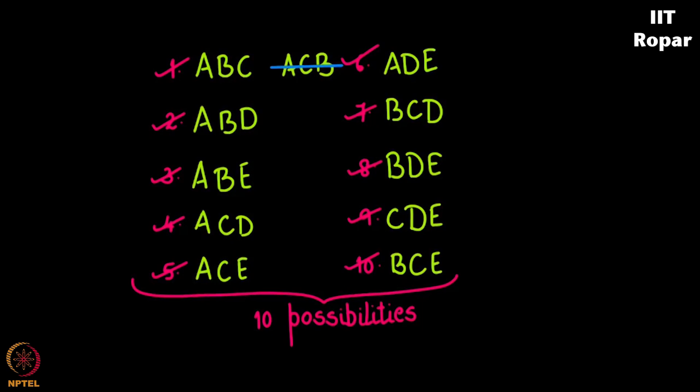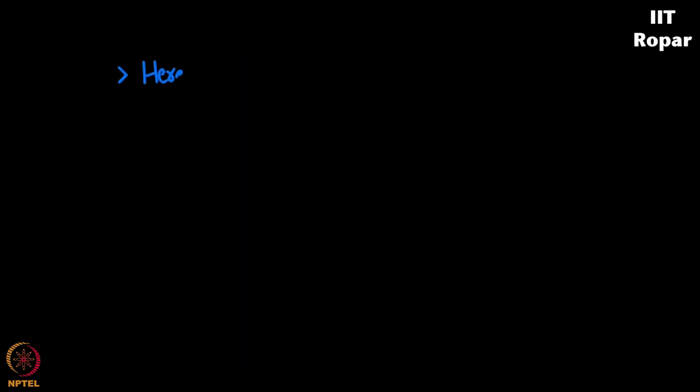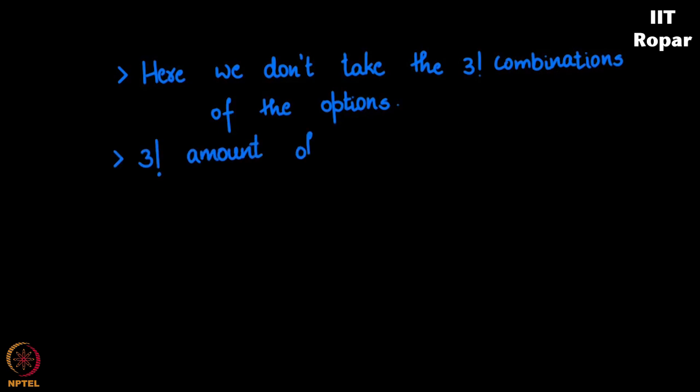So this is same as the previous one, just that we don't take the three factorial combinations of each option, which means every single person appeared three factorial number of times in the previous case, while this three factorial amount of counting will not happen.